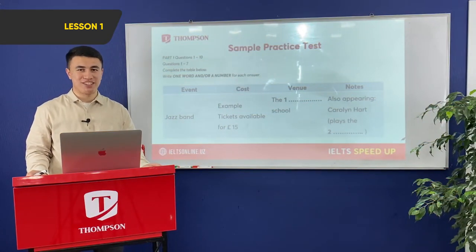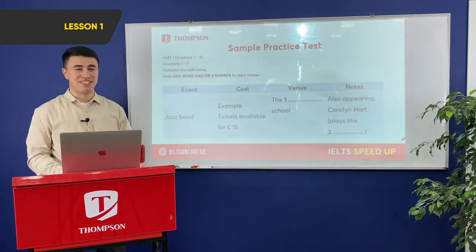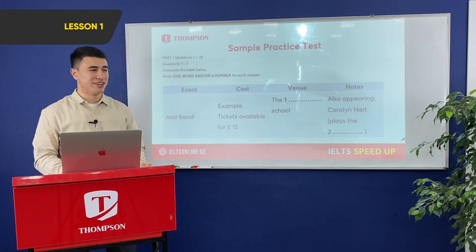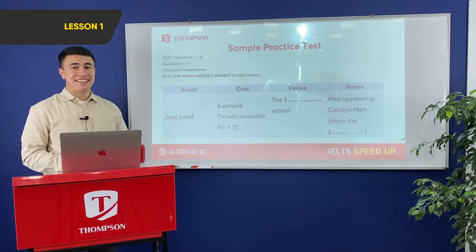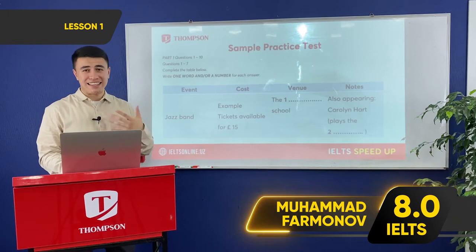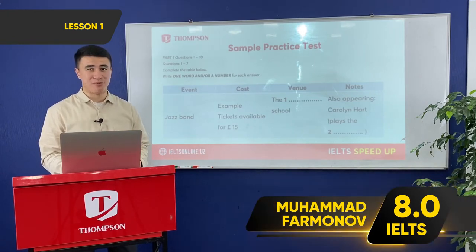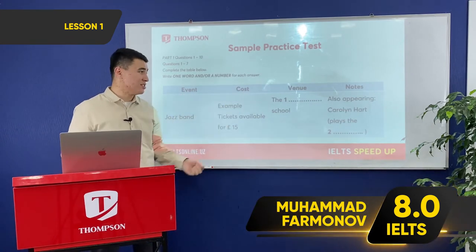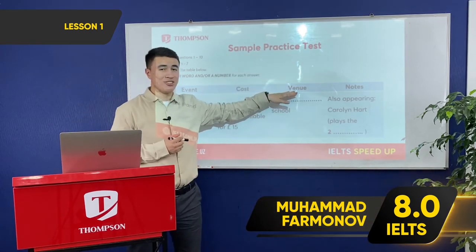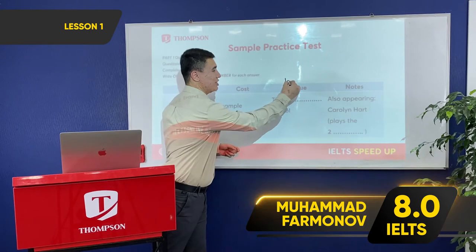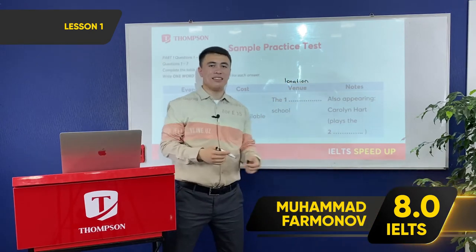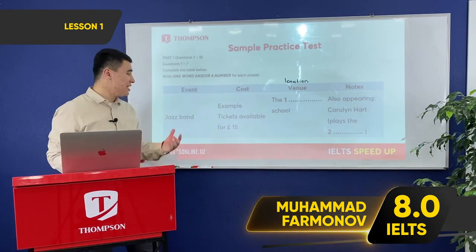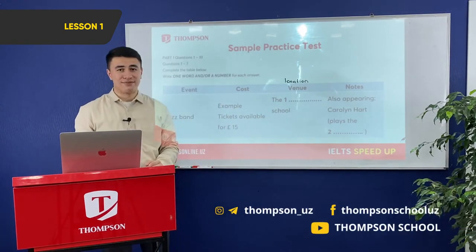Let's move to the next question type: table completion. The instructions are the same — one word and/or a number. A good thing about tables is that you can look at the column titles and clearly know what is expected from you. The first column is the event name, the second is cost, the third is venue or location, and the last is notes with extra information about the event.